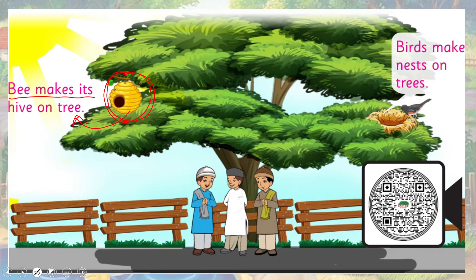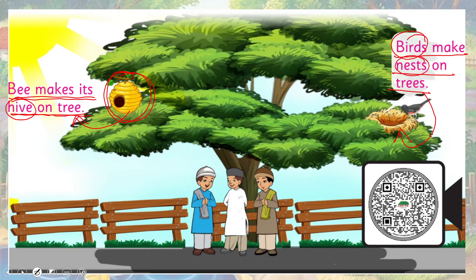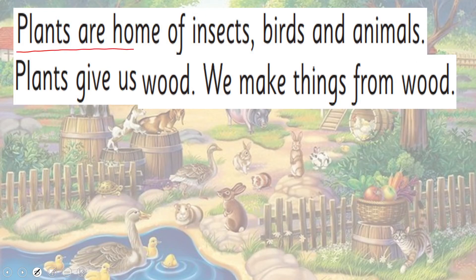Bee makes its hive on a tree. Hive yaani ke chatta. Birds make nests on trees. Aap dekh sakte hain ke parinde apna ghar, yaani ke nest, jo hai wo darakht mein banaate hain. Yahan pe yeh teen bache jo hain wo tree ke saaye mein khade hain. Plants are home to insects, birds, and animals.